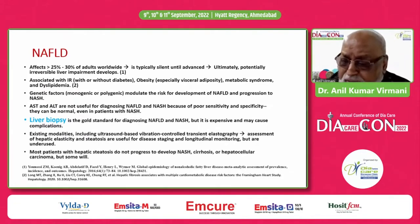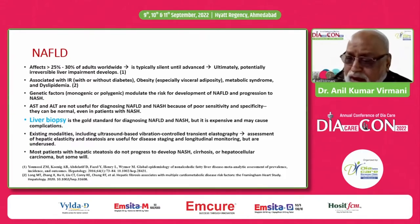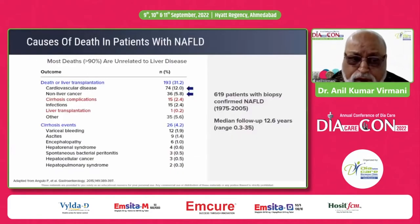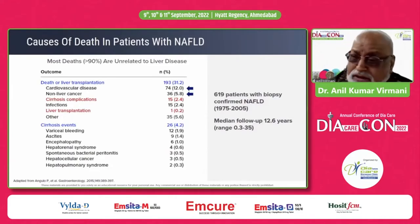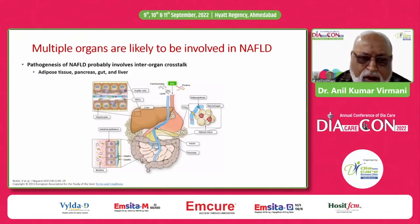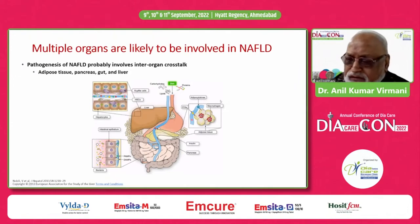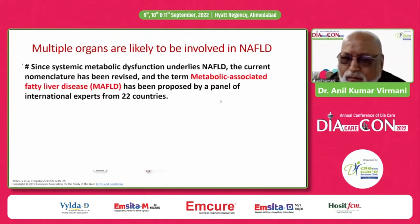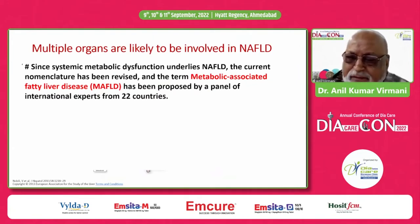Most patients with hepatic steatosis do not progress to develop NASH, cirrhosis, or hepatocellular carcinoma, but some undoubtedly will. If you look at the mortality and cause of death in patients with non-alcoholic fatty liver disease, almost 12% is cardiovascular disease. Multiple organs are likely to be involved in NAFLD — whether it is the adipose tissue, the liver hepatocytes, the gut, or the pancreas. Because of the multifocal involvement of various organs, this is now termed metabolic associated fatty liver disease.